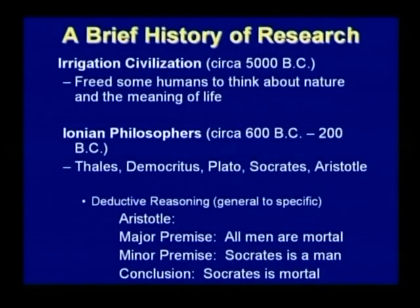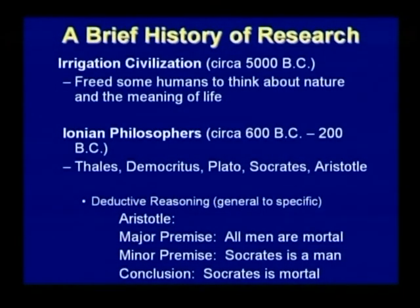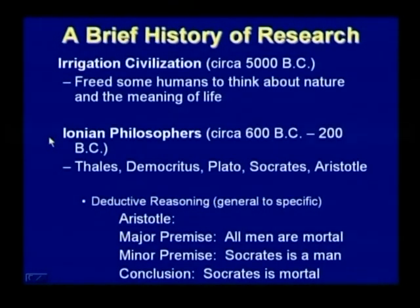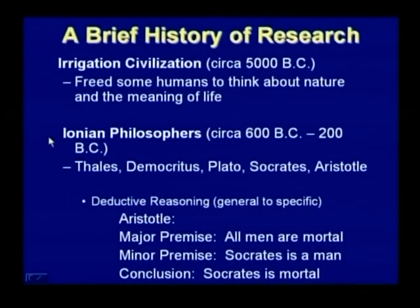Let's briefly review the history of research. Irrigation civilization, around 5000 BC, is when some humans started thinking about nature and the meaning of life. Ionian philosophers, around 600 to 200 BC, include names such as Plato, Socrates, and Aristotle, whose writings are still considered inspiration for many researchers, even though most of their philosophies have been proven wrong. It still gives us a point to start.